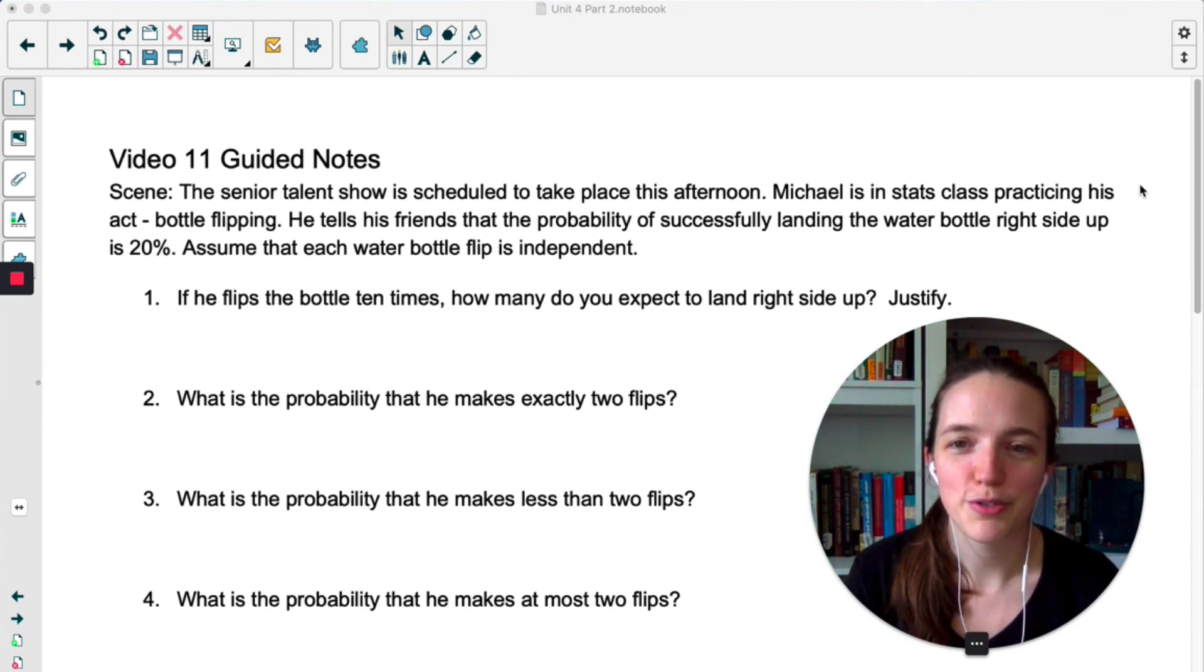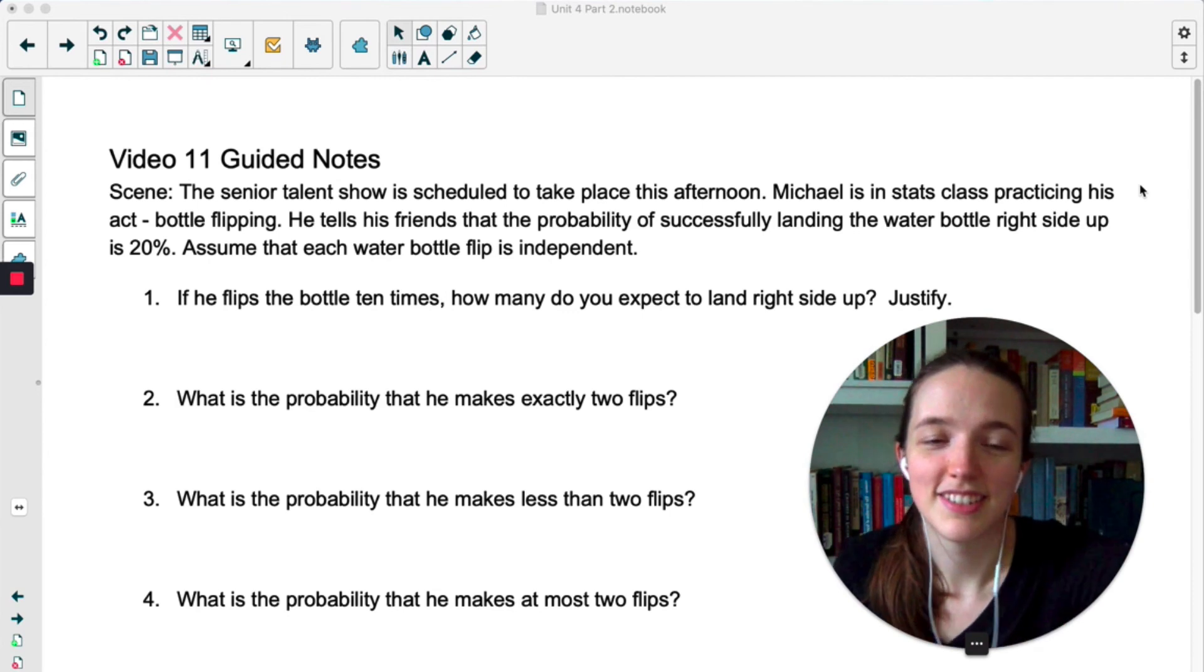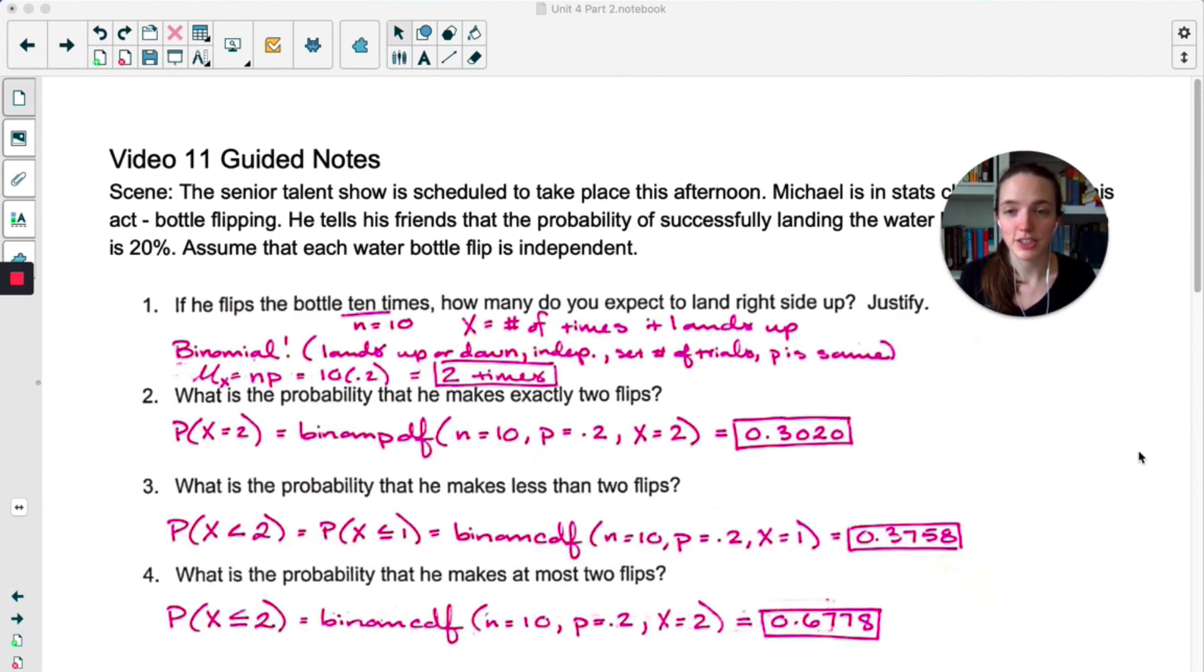For one through four, I want you to try these on your own. Pause the video, and then we'll recap once you hit play. So it's very useful in number one if you notice that it's binomial. B, binary, it's either landing up or down. I, independent, they told us they're independent. N, we have a set number of trials, which is 10. He's flipping it 10 times. And P, the probability of success is the same each time. It's 0.2.